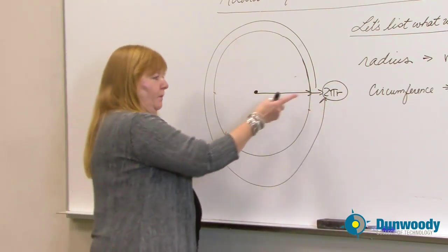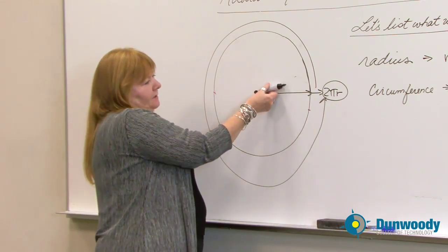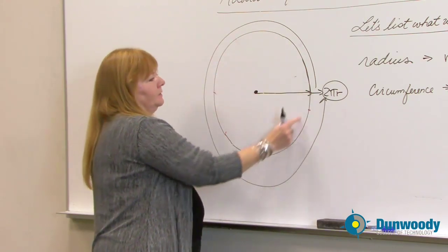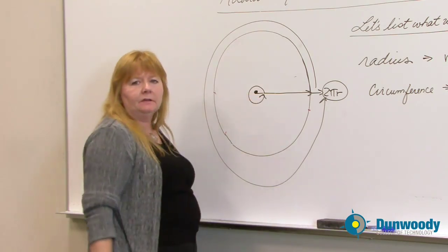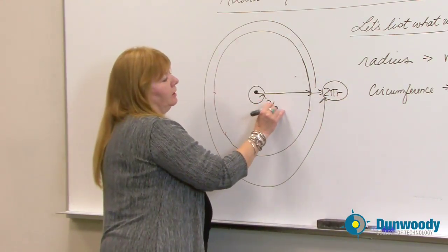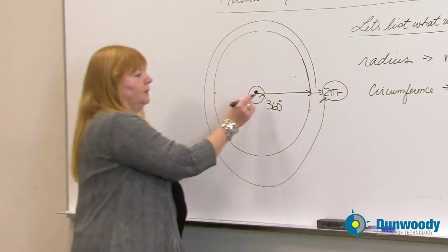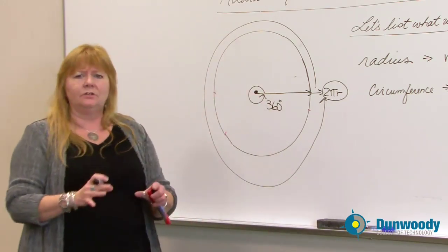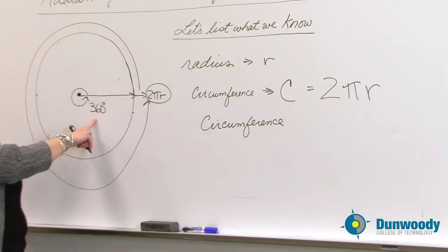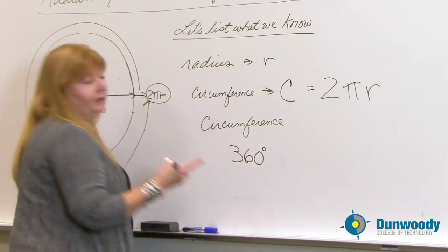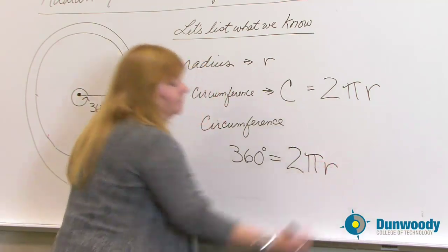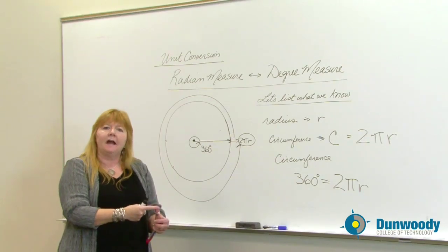There's another way to measure what we call angular change of our radius — through angular measure, measured in degrees. So two things we need to know: we can either measure with 2πr for circumference, or we can measure the distance around a circle in degrees. All circles have 360 degrees. So circumference can be measured either by angular change in degrees — 360 degrees — or in radian measure: 2πr. They mean the same thing, just two different ways to measure exactly the same thing.